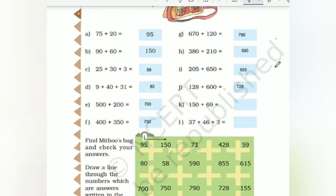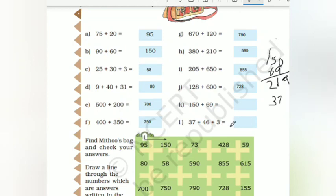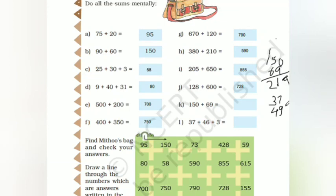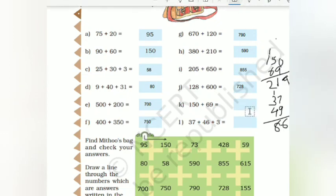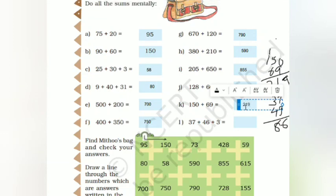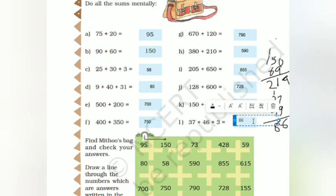Then 150 plus 69: 9 plus 0 is 9, 6 plus 1 is 11, write 1 carry 1, 1 plus 1 is 2. So 219. Then 37 plus 46 plus 3 is 49: 7 plus 7 is 14, 7 plus 8 is 15, 7 plus 9 is 16; balance 1; 3 plus 4 is 7, plus 1 is 8, so we get answers 219 and 86.